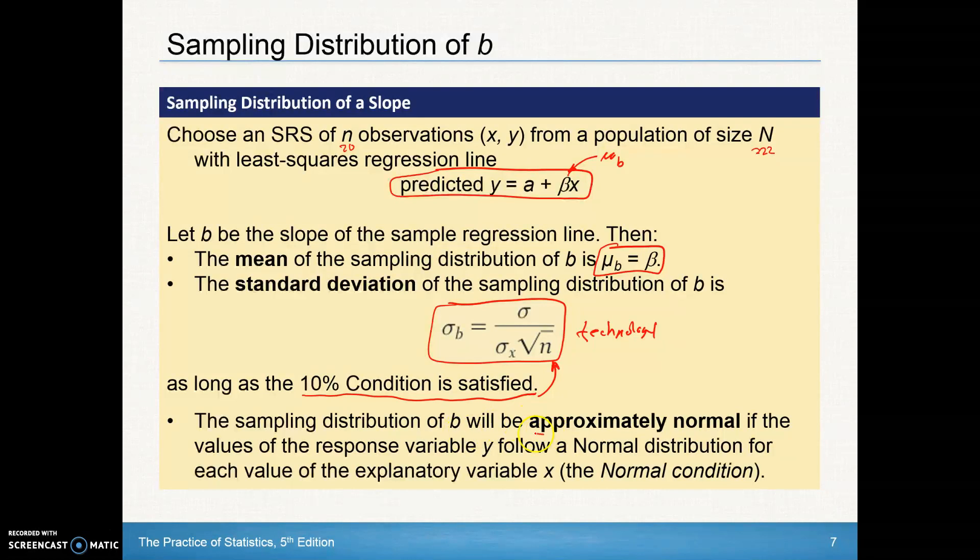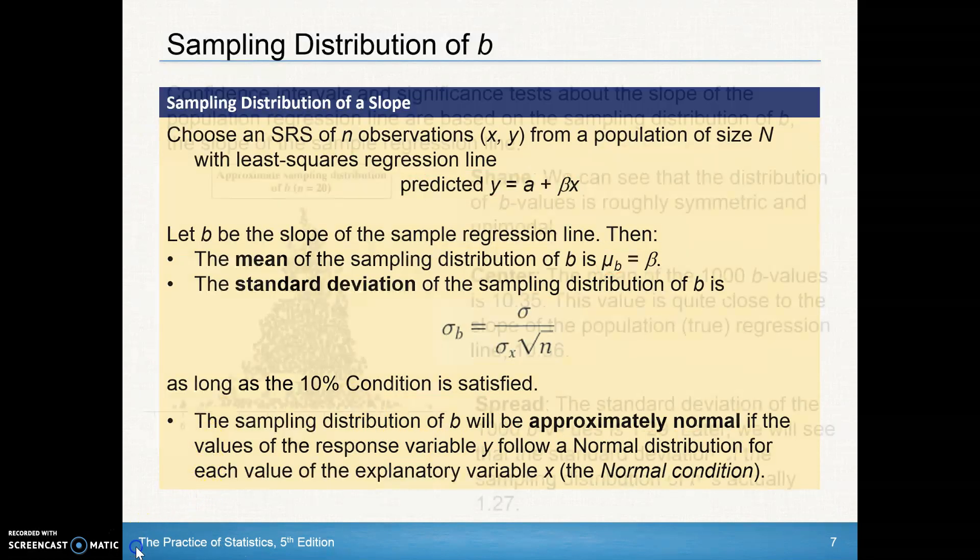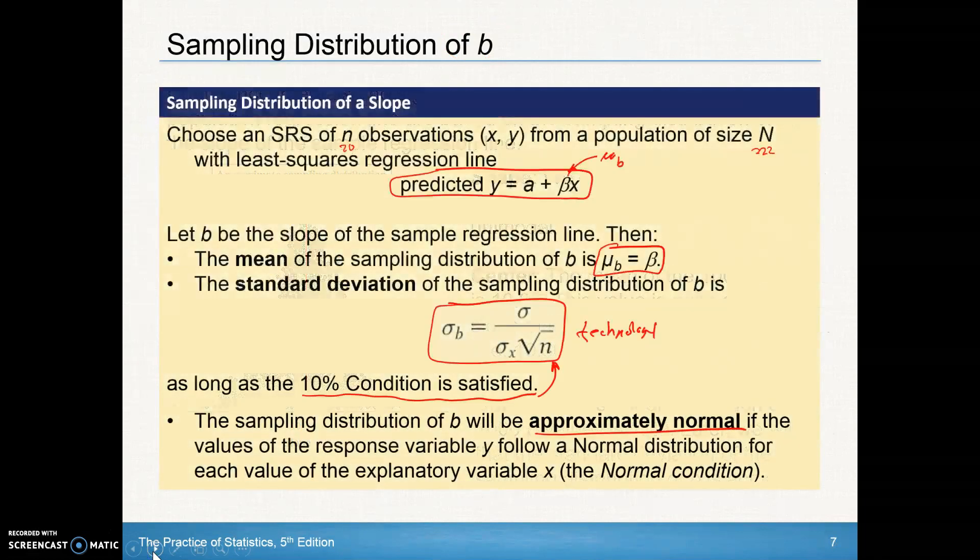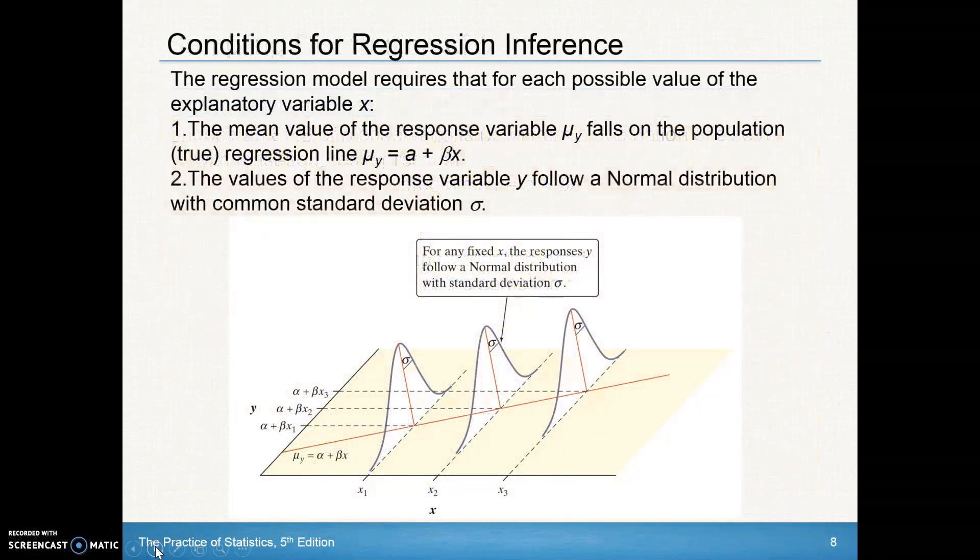And again, the sampling distribution should be able to be approximately normal if the values of the response variable Y follow a normal distribution for each value of the explanatory variable X. So that sampling distribution as we looked back before will be approximately normal the more and more we take as we see.